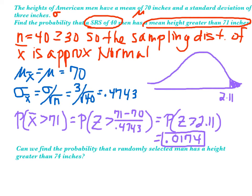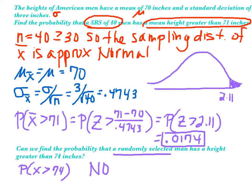Now look at the second question: can we find the probability that one randomly selected man has a height greater than 74 inches? We only know the mean and standard deviation of the heights of American men — we don't know that the distribution is normal. So we can't do this. If we knew it was normal to begin with, we could, but since we don't, we'd just be guessing. Here n = 1, so CLT does not apply. We knew the distribution for a sample of size 40 was approximately normal by CLT, but for just one observation, we cannot use CLT.